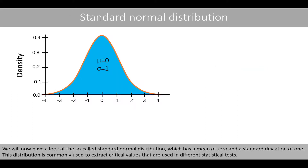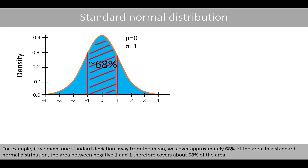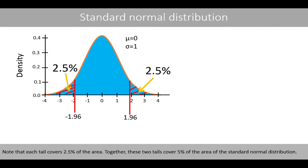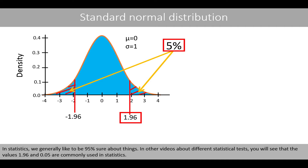We'll now look at the so-called standard normal distribution, which has a mean of 0 and a standard deviation of 1. This distribution is commonly used to extract critical values used in different statistical tests. For example, moving one standard deviation away from the mean covers approximately 68% of the area. In the standard normal distribution, the area between negative 1 and 1 covers about 68%. Bounds that cover approximately 95% of the area are negative 1.96 and 1.96, with each tail covering 2.5% of the area, and together the two tails cover 5%. In statistics, we generally like to be 95% sure about things, which is why the values 1.96 and 0.05 are commonly used.